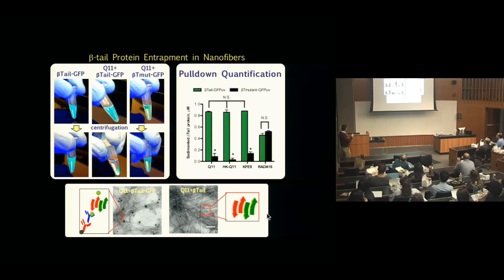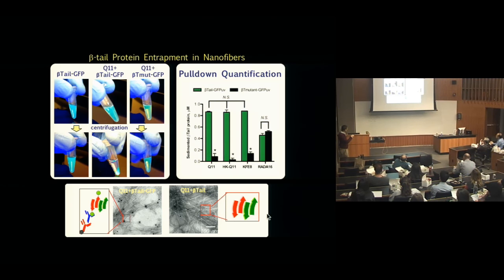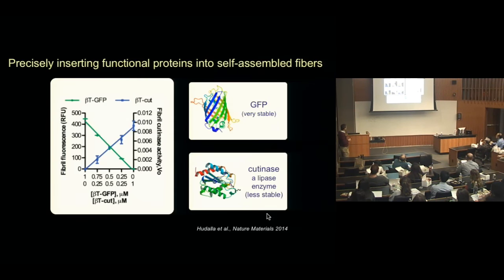Looking at the incorporation of proteins within nanofibers — if you take the expressed protein and spin it down, the protein is not sedimentable. But if we combine it with Q11 fibrilizing peptide, it entraps within the nanofibers. We can label the protein in those nanofibers with gold and spin down the fibers to deplete all of the protein. With the mutated protein added to the peptide, there's a pellet of fibers but it doesn't drag the protein with it. The incorporation is nearly quantitative, so we can easily dose different proteins into the nanofibers.